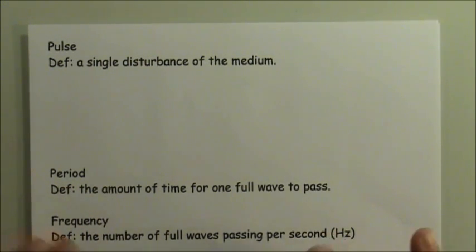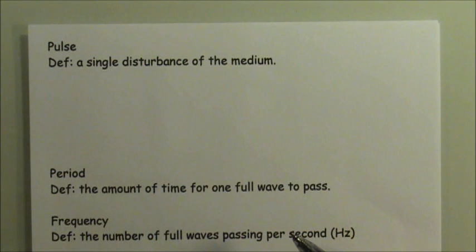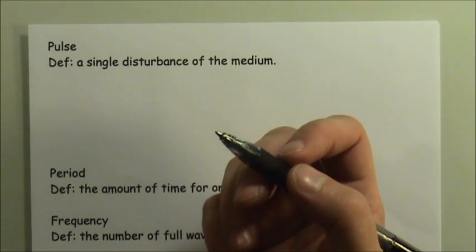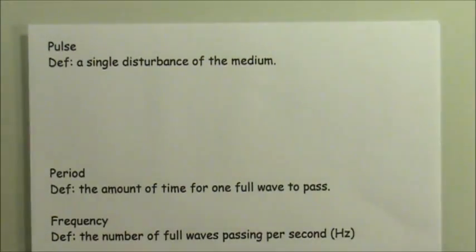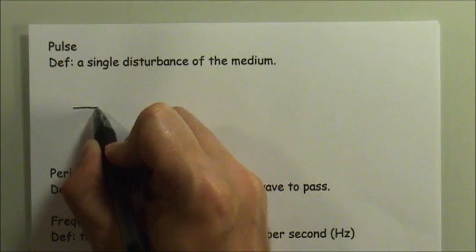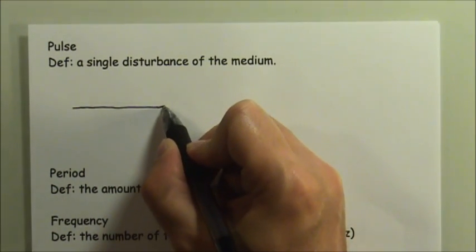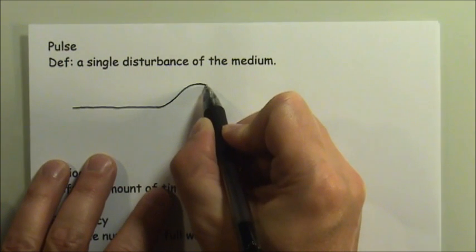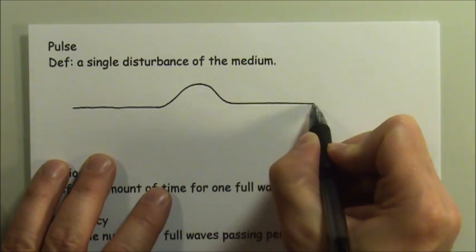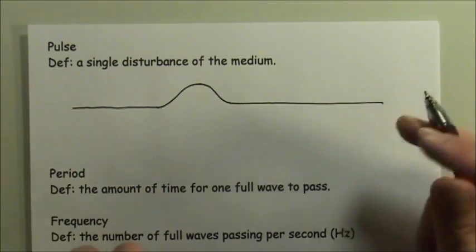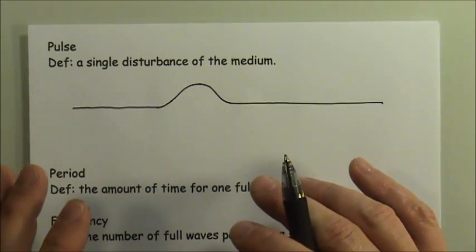There is another form of wave which is not a repeating wave, and that is a pulse. When I drew the explanation of what causes the wave motion and the disturbance, what I was drawing was a single pulse. So if you look at what a pulse looks like, here's the string and what you would see is one hill or one crest, and that's it.